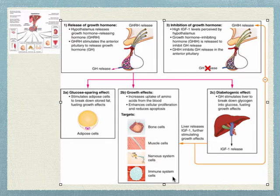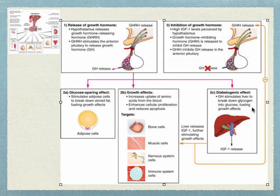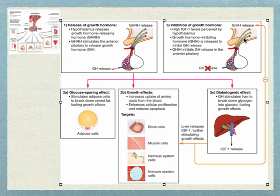However, growth hormone in excess has a diabetogenic effect, because it will stimulate the liver to break down glycogen into glucose. This further fuels growth effects because it's releasing IGF-1. If there's inhibition of growth hormone — if you're not getting enough — it's perceived by your hypothalamus, and then the release is inhibited further. It's like halting the feedback loop.